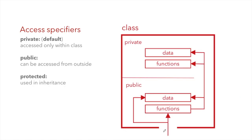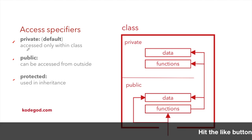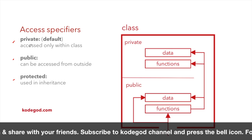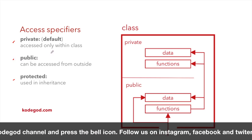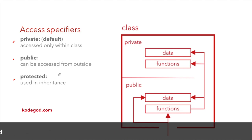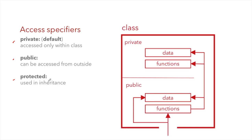Now let's talk about access specifiers. In C++ there are three access specifiers: private, public, and protected. Private is the default — when you don't write any access specifier, private is assumed. Members with private access can only be accessed within the class and cannot be directly called from outside. Public members, on the other hand, can be accessed from outside the class. Protected is used in inheritance, so we'll defer that.